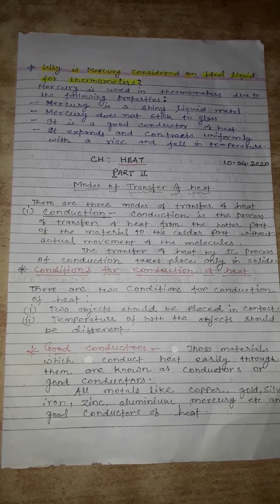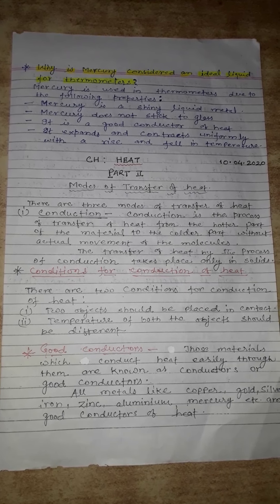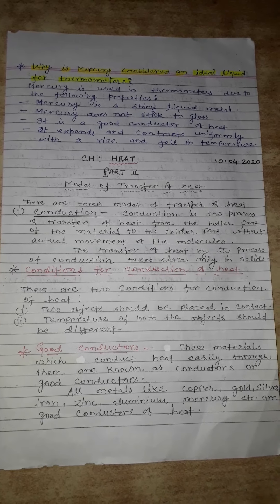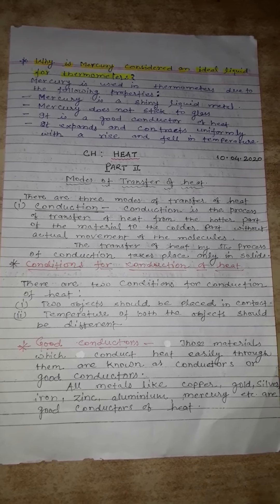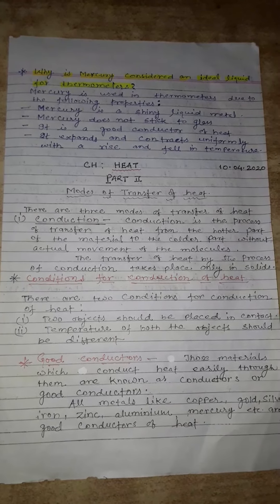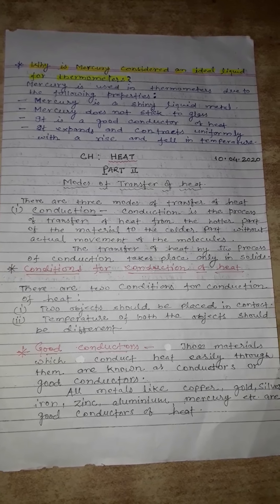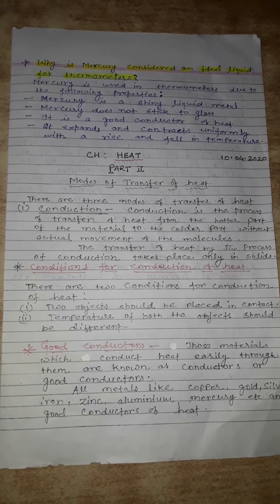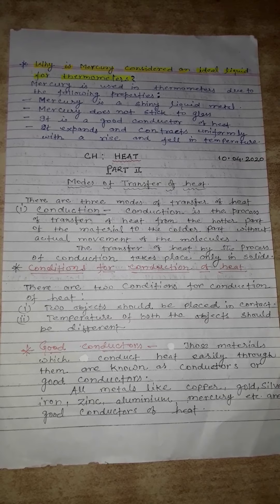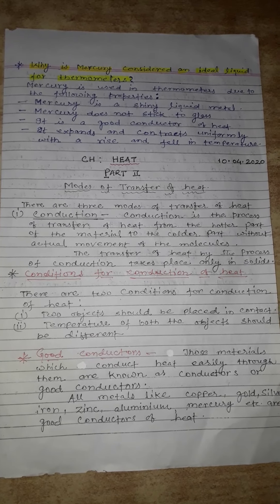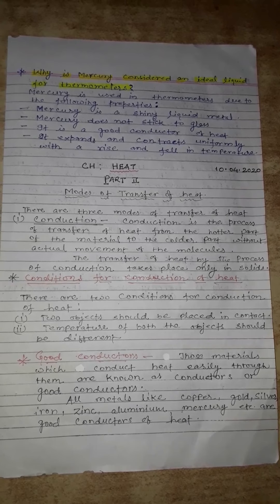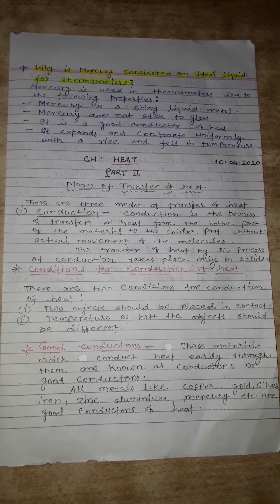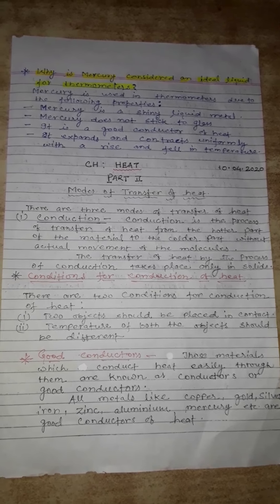What are the two conditions for the conduction of heat? There are two conditions. First, both the objects should be placed in contact — the two bodies should be in contact with each other. Second condition is the two bodies should have different temperatures, because heat always flows from one body to the other if there is a temperature difference. If the temperature of both ends of the conductors is the same, then transfer of heat will be stopped.